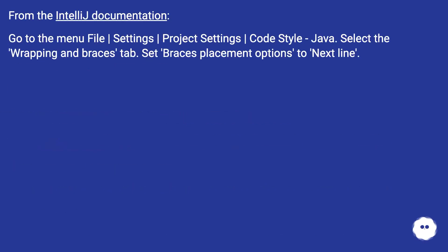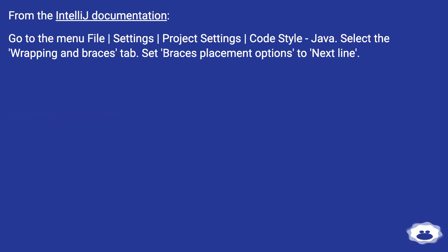From the IntelliJ IDEA documentation, go to the menu File, Settings, Project Settings, Code Style, Java. Select the Wrapping and Braces tab. Set the Brace placement option to next line.